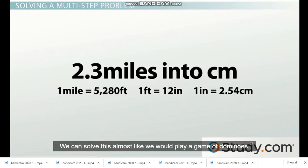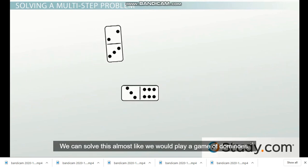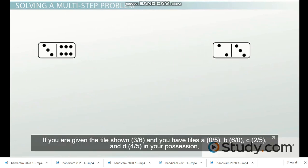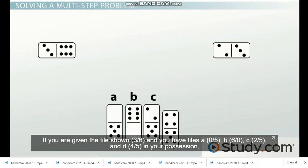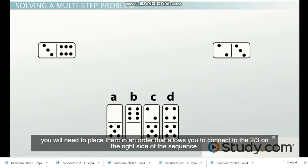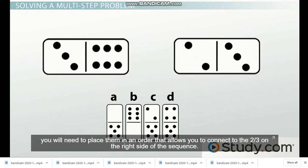We can solve this almost like we would play a game of dominoes. If you are given the tiles shown, and you have tiles A, B, C, and D in your possession, you will need to place them in an order that allows you to connect to the two on the right side of the sequence.